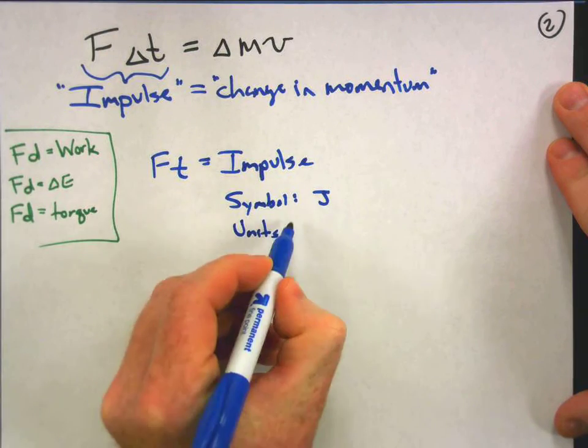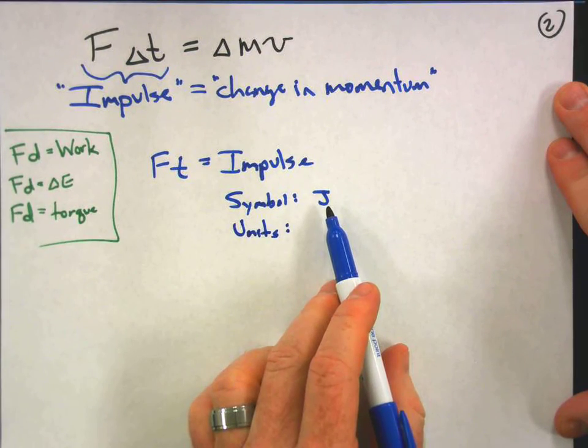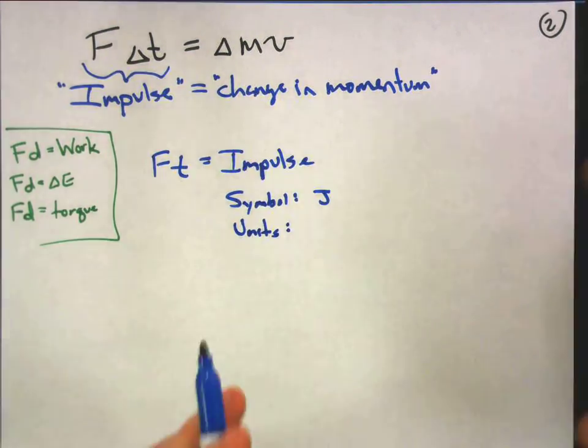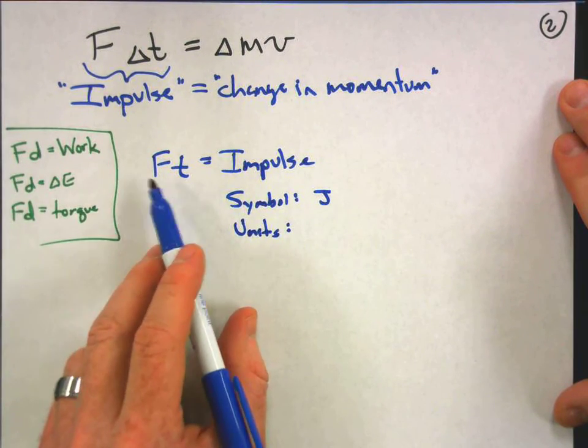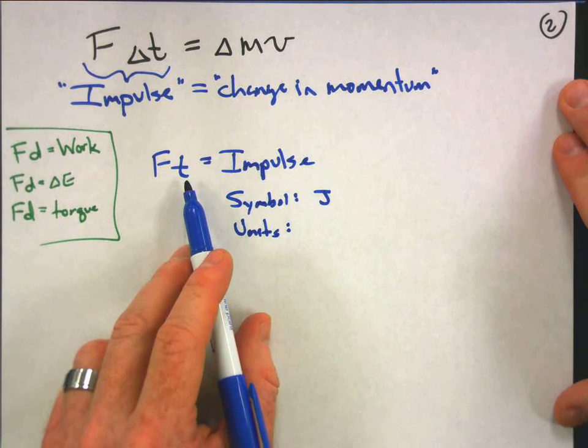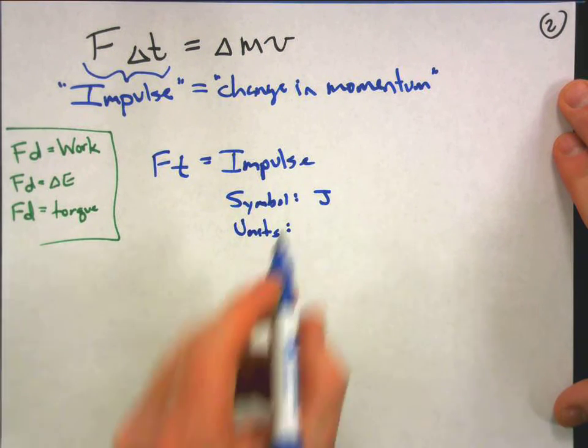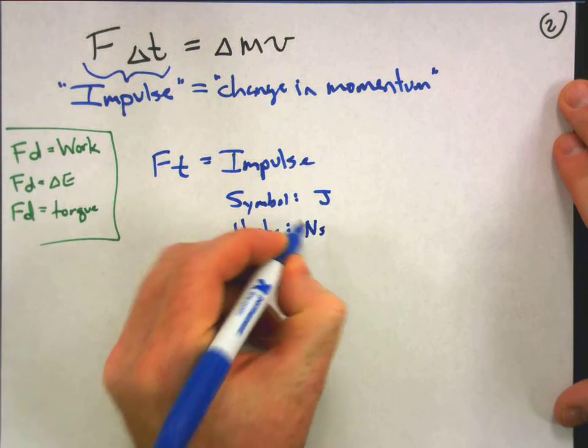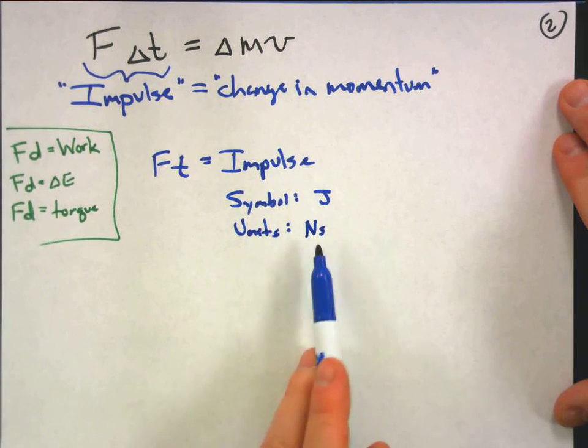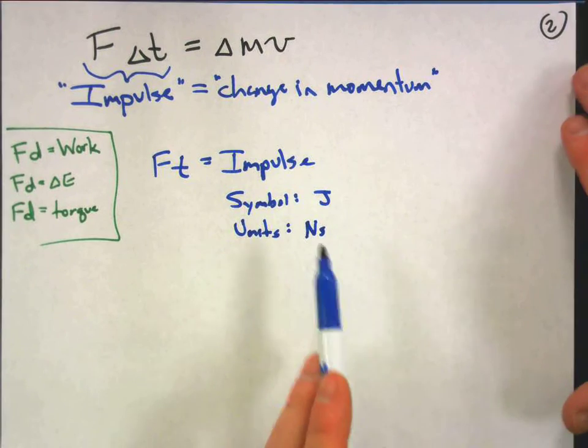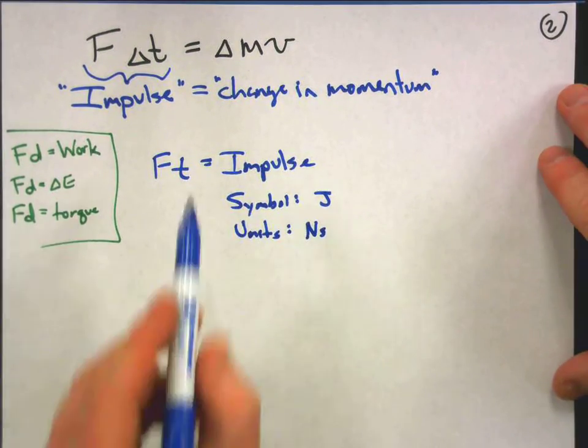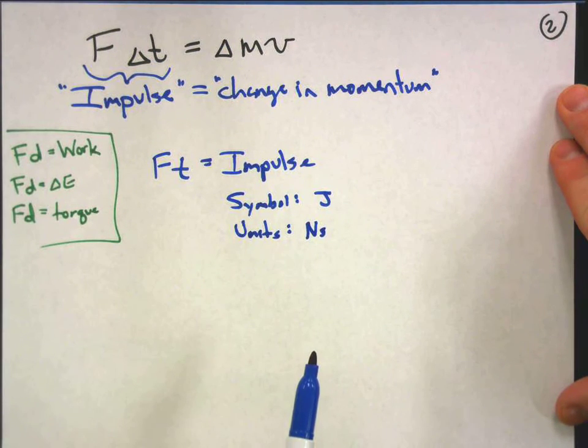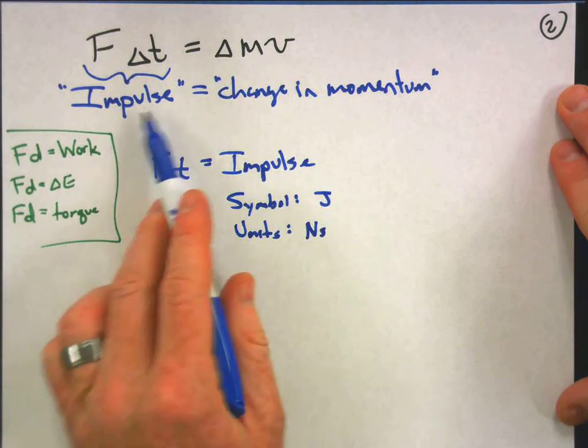Maybe because the authors of the textbook decided throwing around another capital J is just going to mess with people's heads a little too much. The units of impulse, we have force which is measured in newtons, and time is measured in seconds. So our units will be newton seconds. There really isn't any way to combine those in a nice single thing, so you just say newton seconds. That's literally what you say.